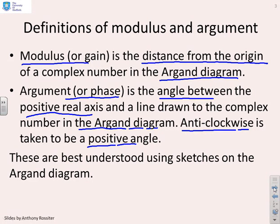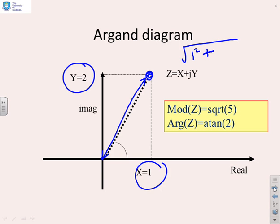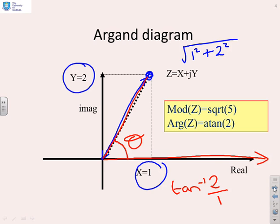It's easier to demonstrate this with a sketch. Here's an example: z equals x plus jy. The modulus is the distance from the origin. With x equals 1 and y equals 2, that distance is the square root of 1 squared plus 2 squared — simply Pythagoras. The phase is the angle between the positive real axis and the line drawn to the number, which is tan⁻¹(2 over 1).